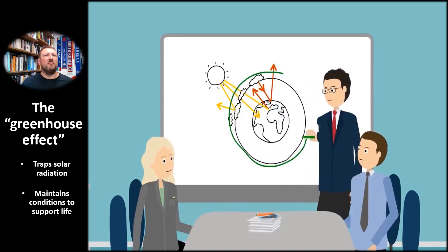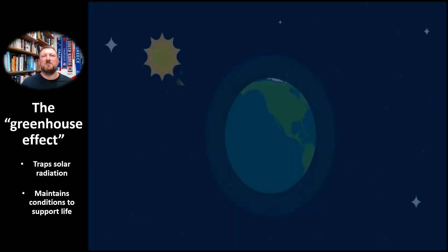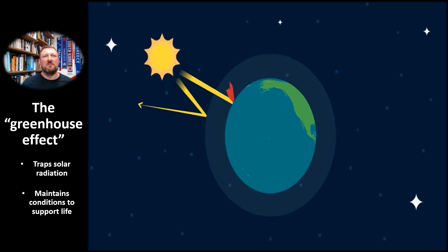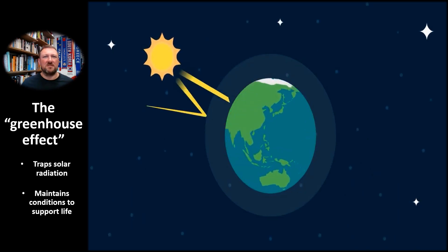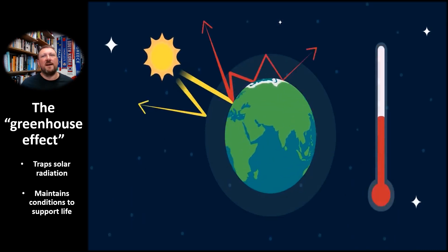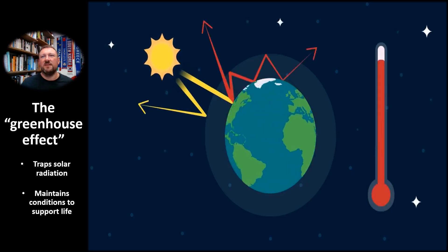Let's consider the role of the atmosphere in regulating the living conditions for spaceship Earth. The Earth is hospitable to life because of the greenhouse effect, so named because layers of greenhouse gases in the atmosphere act like the panes of glass in a greenhouse, which trap solar radiation and keep the Earth warm. This blanket of warmth is what makes life possible on the planet.